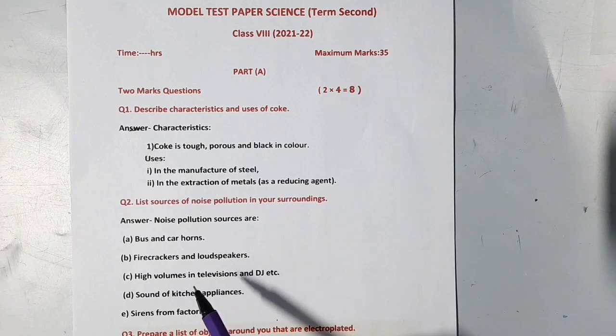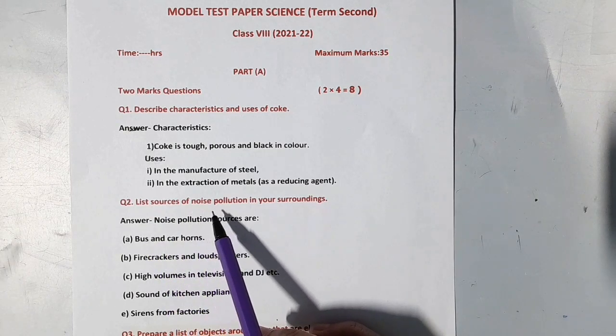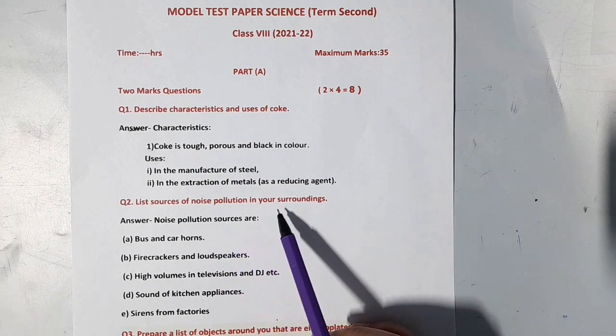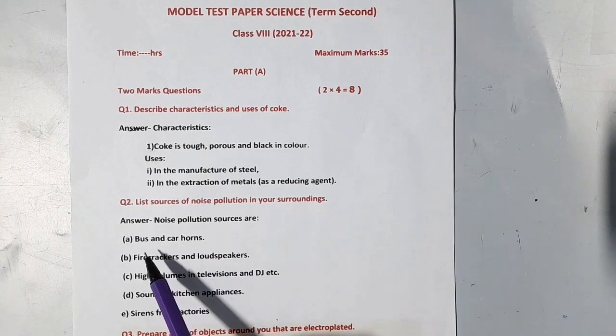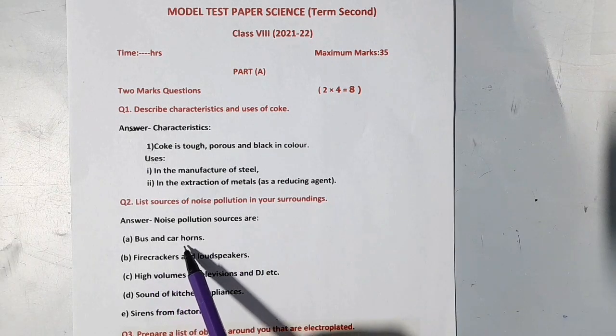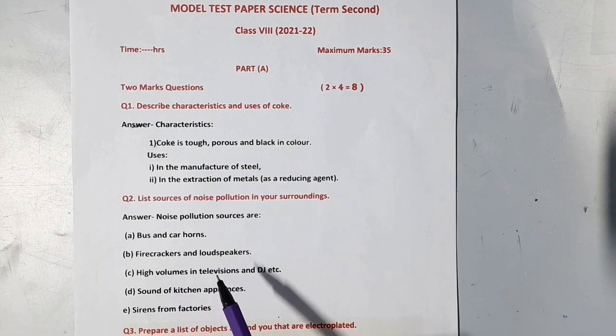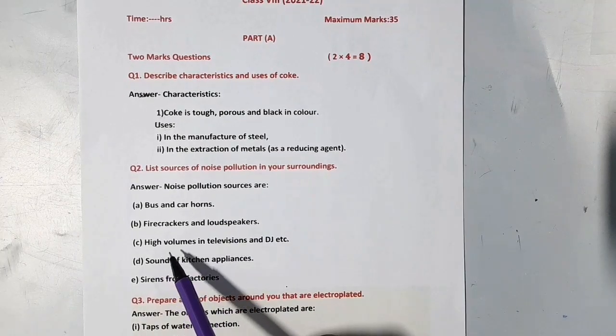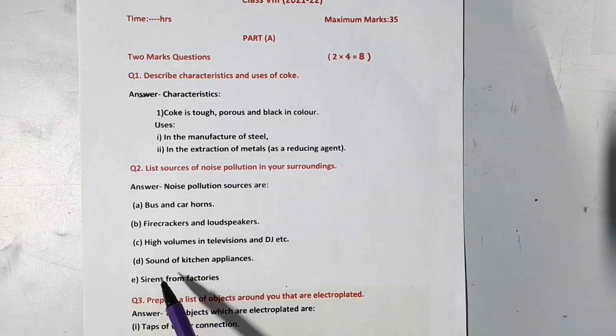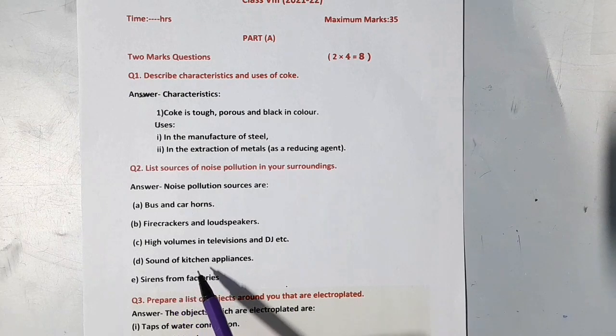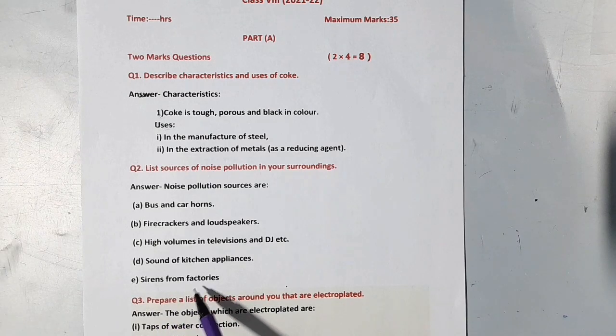Next question is list sources of noise pollution in your surroundings. Noise pollution sources are: Bus and car horns, firecrackers and loudspeakers, high volumes in televisions and DJ etc., sound of kitchen appliances, sirens from factories.